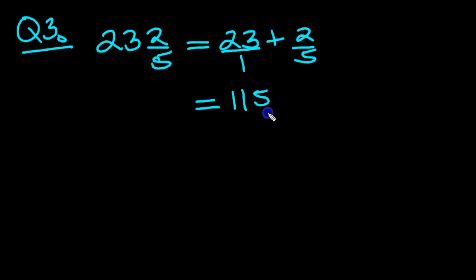100 plus 15 is 115, and 5 of these. So 23 is the same as 115 fifths, isn't it?